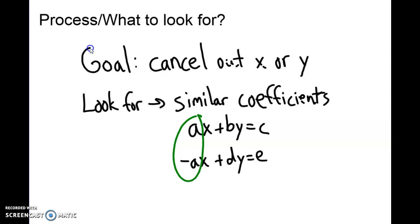Ideally, I want the same number and a different sign, because what I can then do is add the equations together and they're going to cancel each other out. If I can't get this, I want numbers that play well together. The goal is to cancel out x or y so that way we can solve, and then we end up going back and solving for the other one.